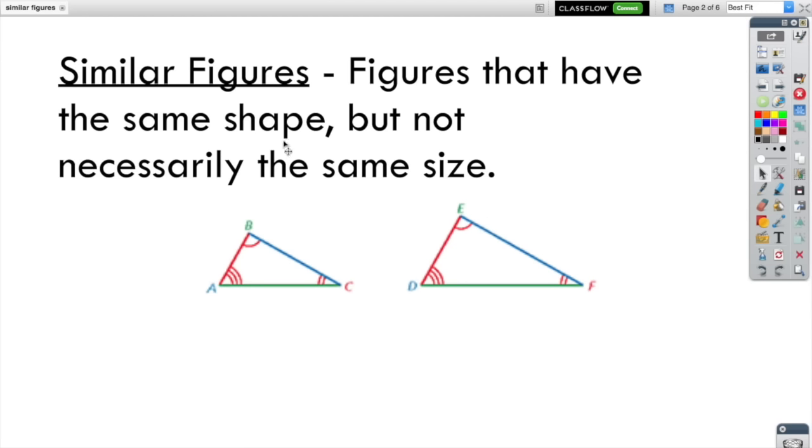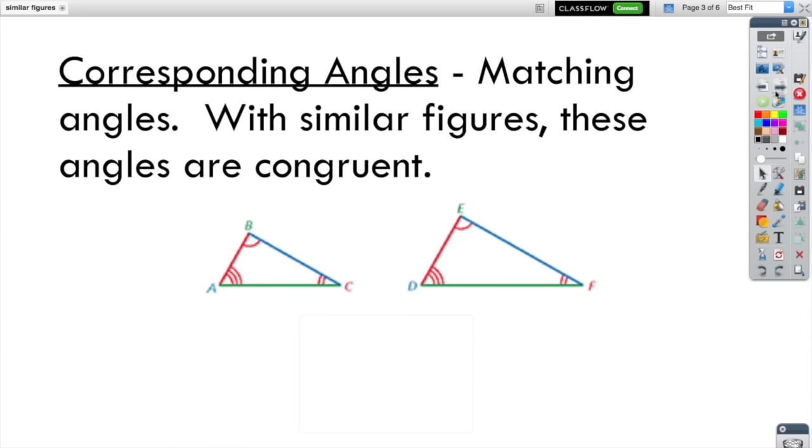That's how similar is different from congruent. With congruent figures, the figures would have to be the same shape and the same size, but with similar figures, same size is not a requirement.